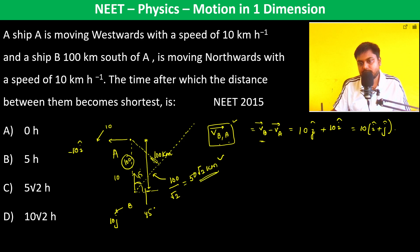And what is the velocity? The velocity's magnitude is 10 root 2 kilometer per hour, because it's 10 root 1 square plus 1 square. So now the distance which has to be traveled is 50 root 2 kilometer. Velocity is 10 root 2 kilometer per hour.